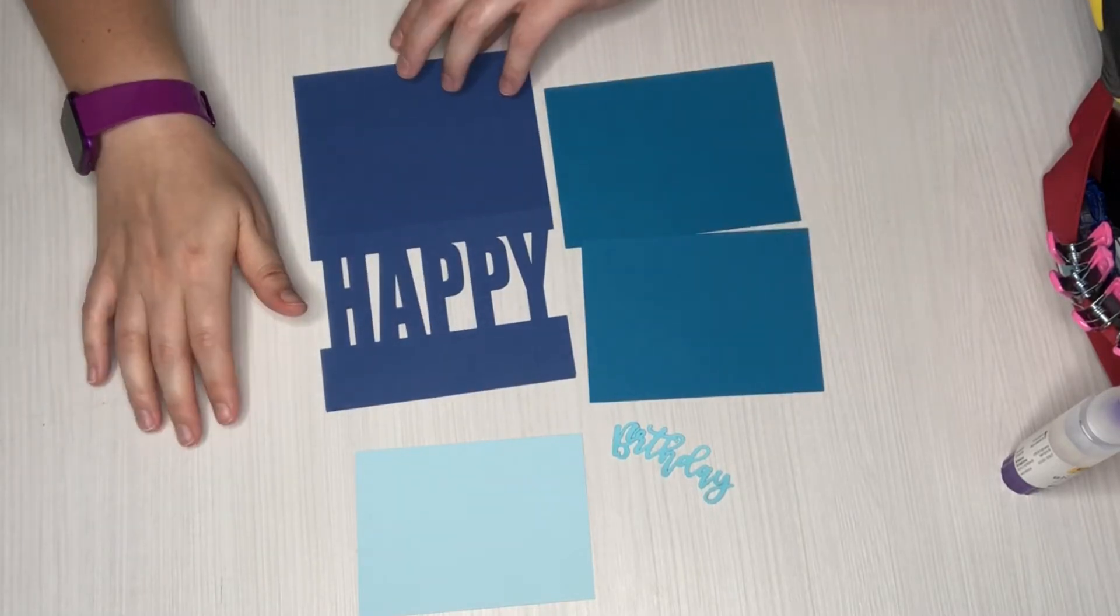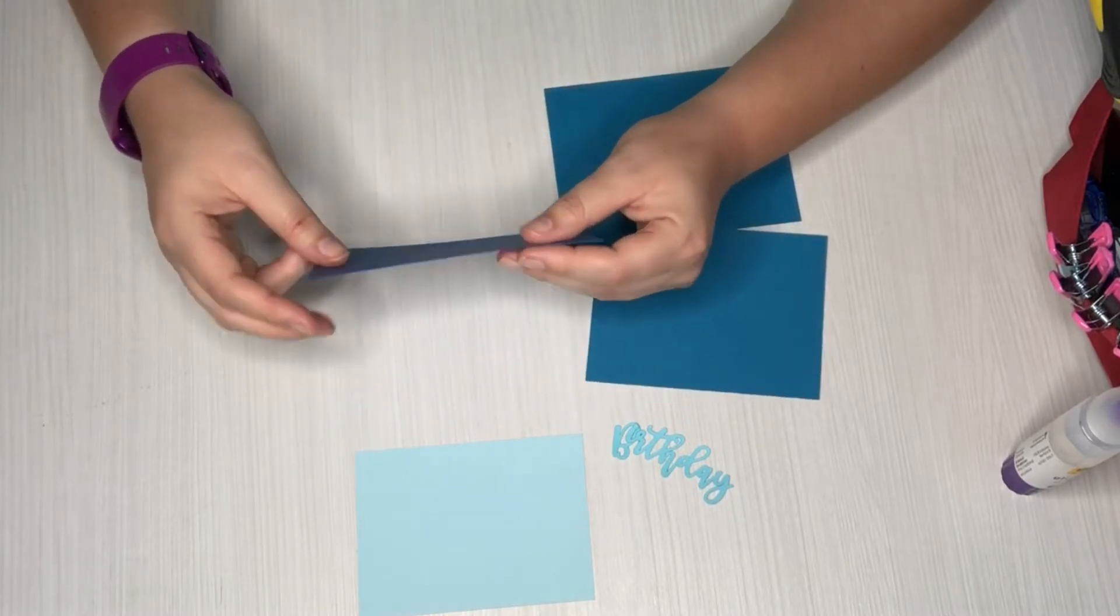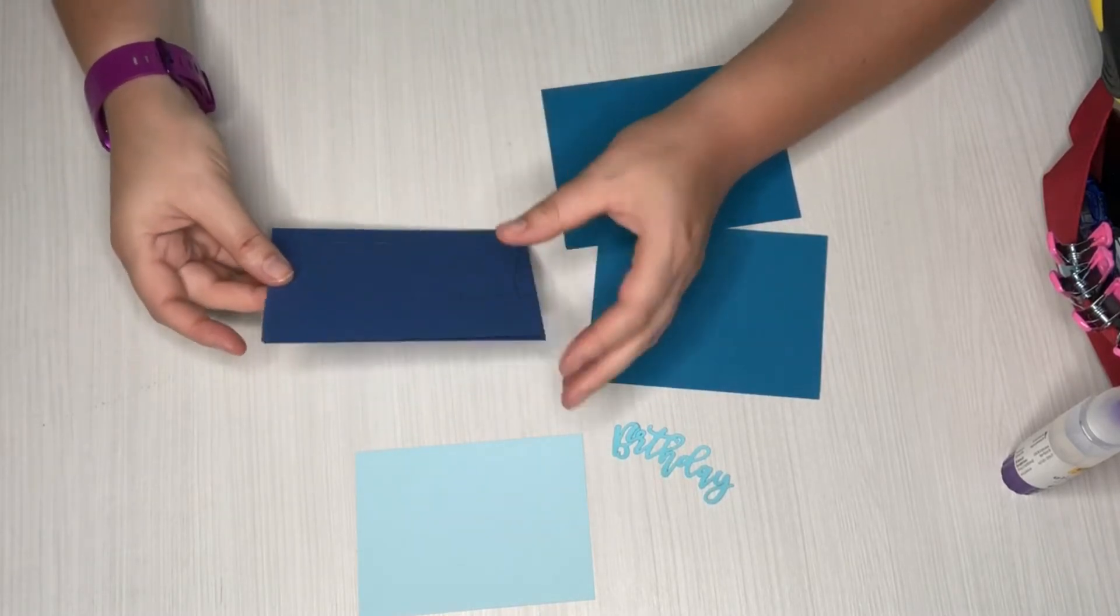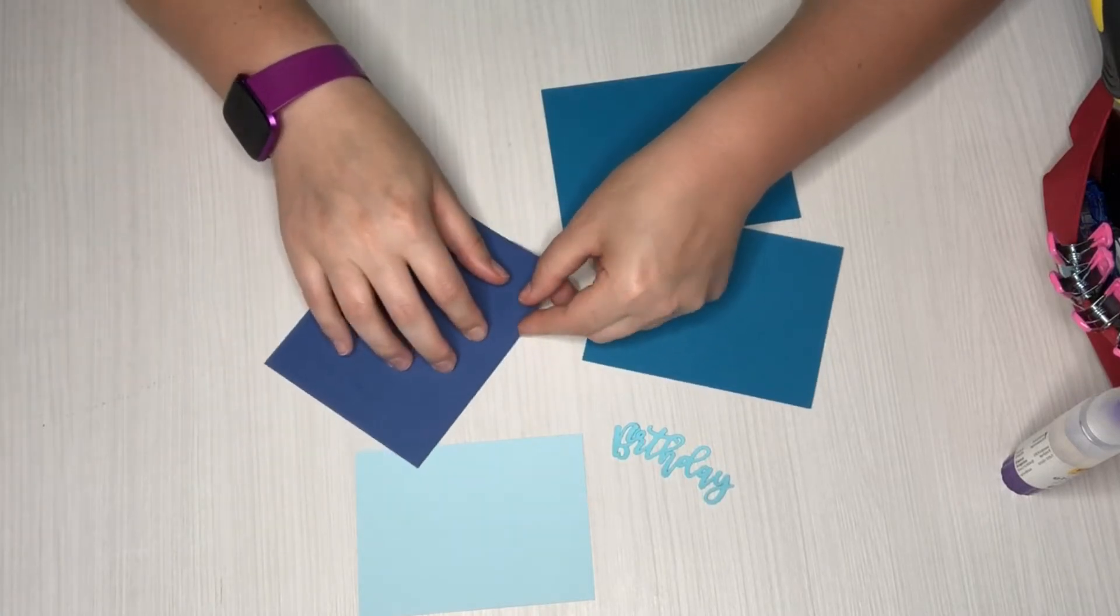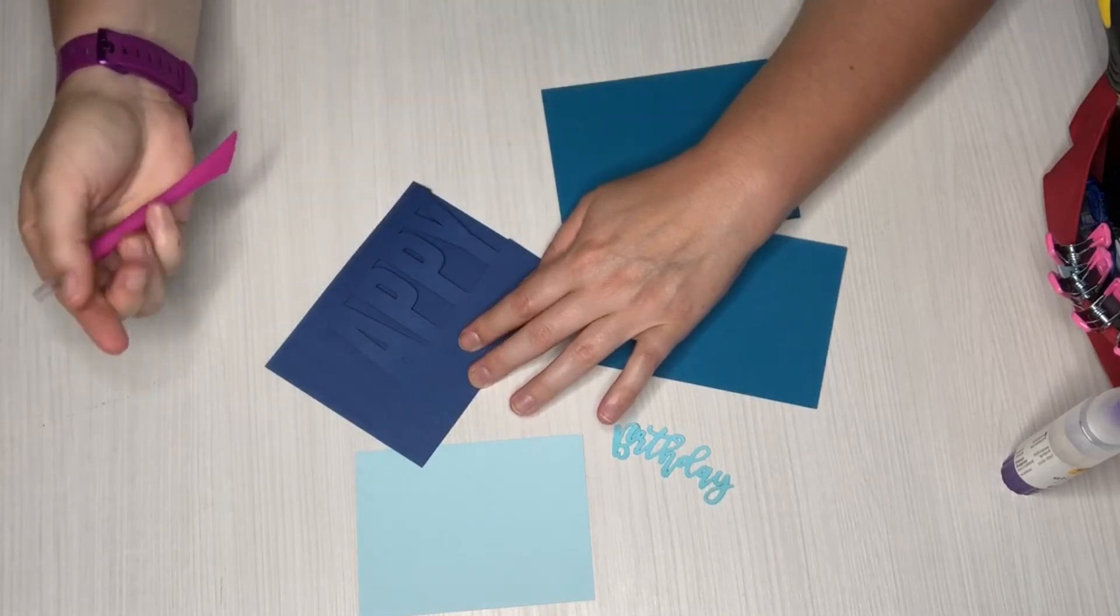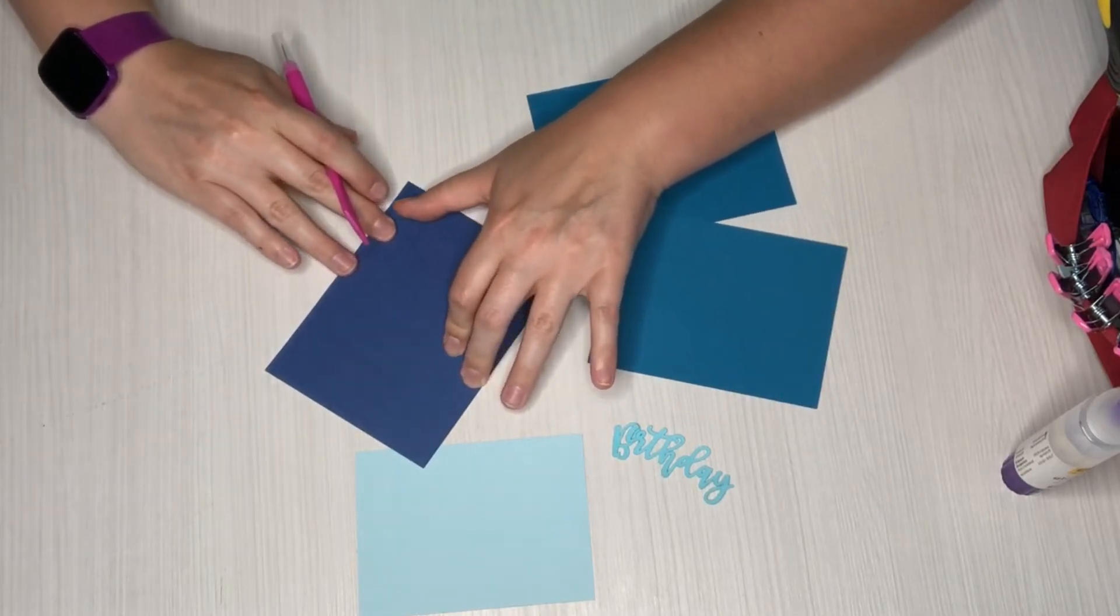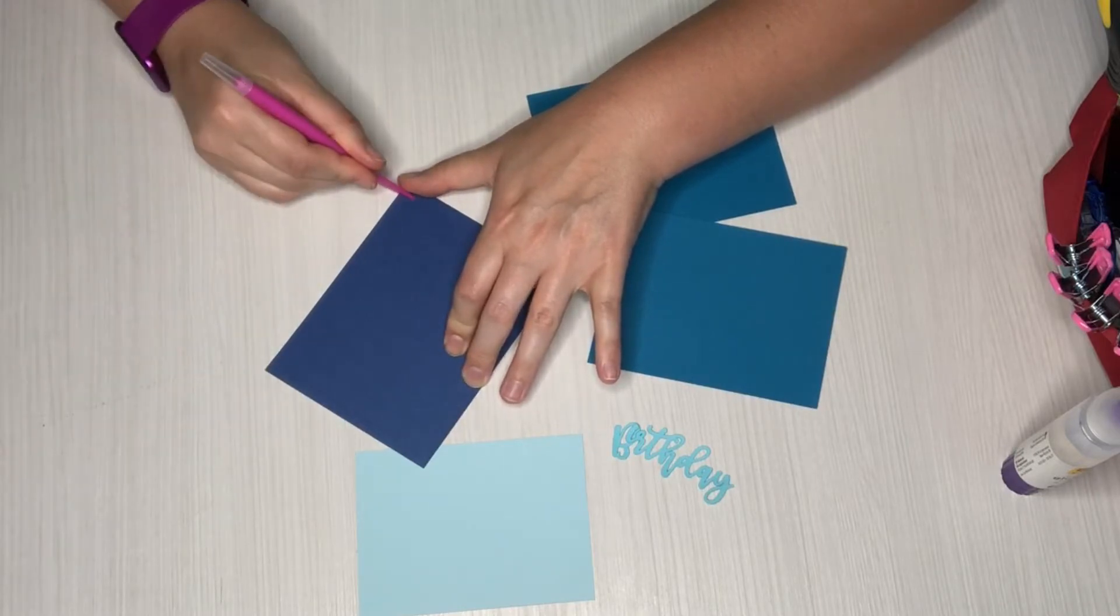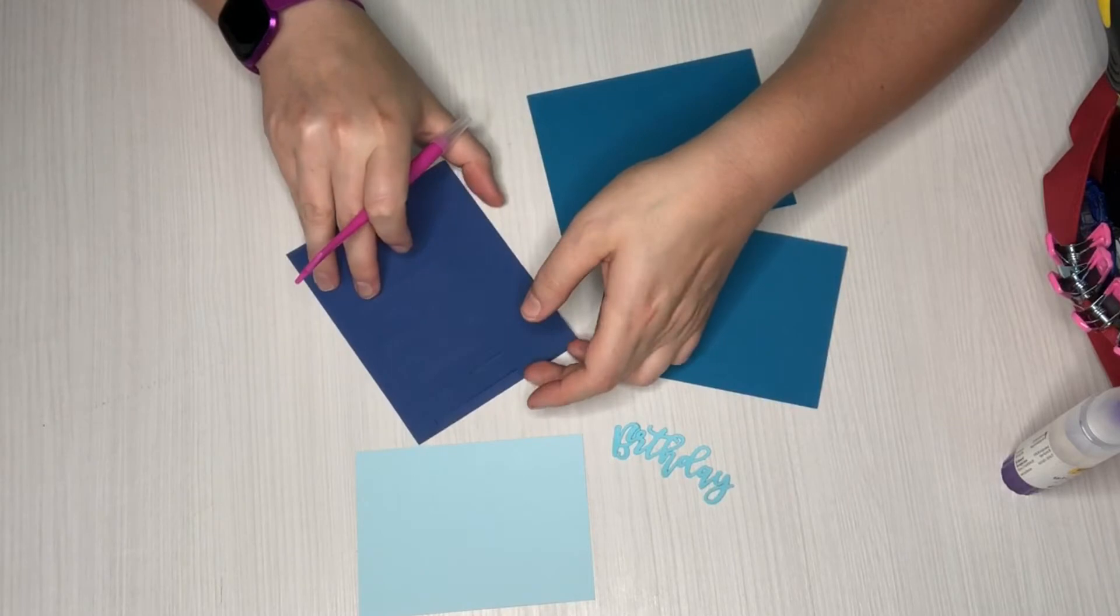So let's go ahead and get started putting this together. This has got the score line. You're gonna go ahead and just fold on that score line and you want to make sure everything is lined up nicely. And then I like to pull out my bone folder or my little scoring tool here to really fold that and make sure we get a nice good crease there.